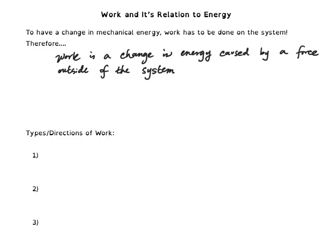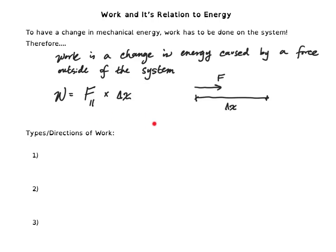Our mathematical definition is: work equals force parallel times displacement. What I mean by force parallel is that the force is parallel to our displacement. So if I have a displacement that is horizontal, my force is also directed horizontally. Relating back to that last scenario, the spring was applying a force that was parallel to the displacement of the crate. While the crate was in contact with the spring, the spring released, applied a force this way, and the crate also displaced itself in that same direction.